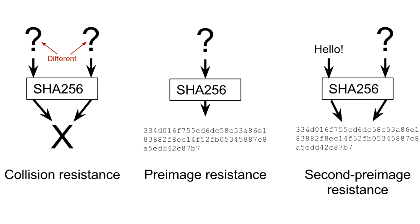We use 2nd Preimage Resistance: we have the whole value to give us one hash value, and we have the value to generate the hash value. This is called Second Preimage Resistance.